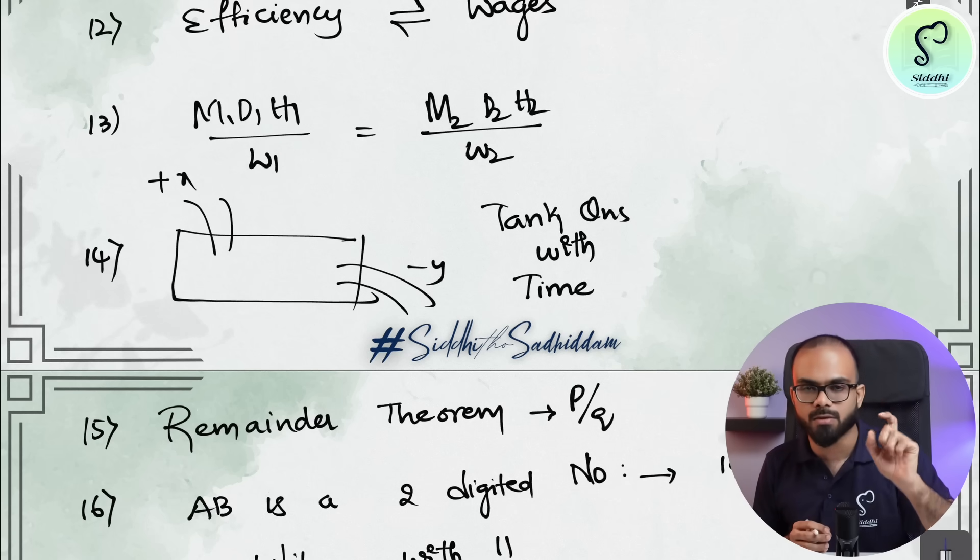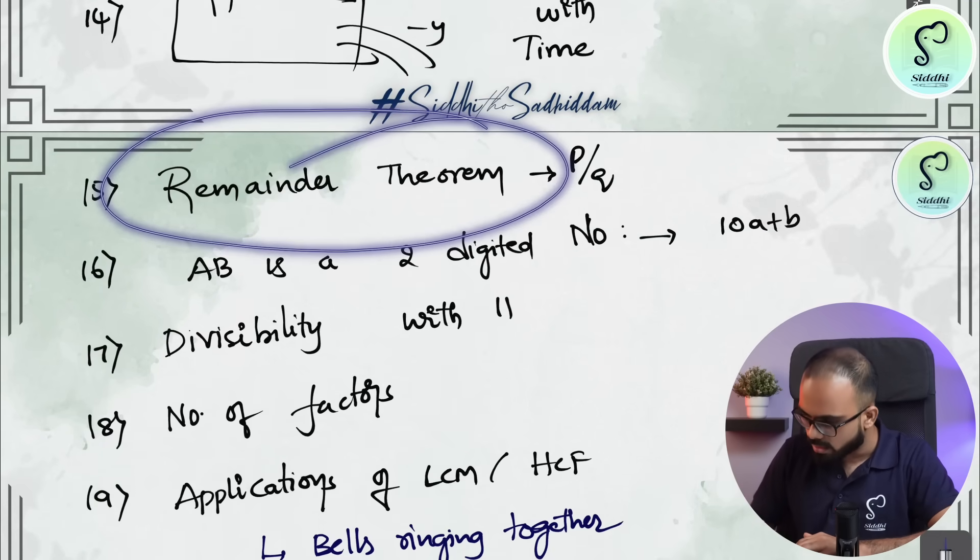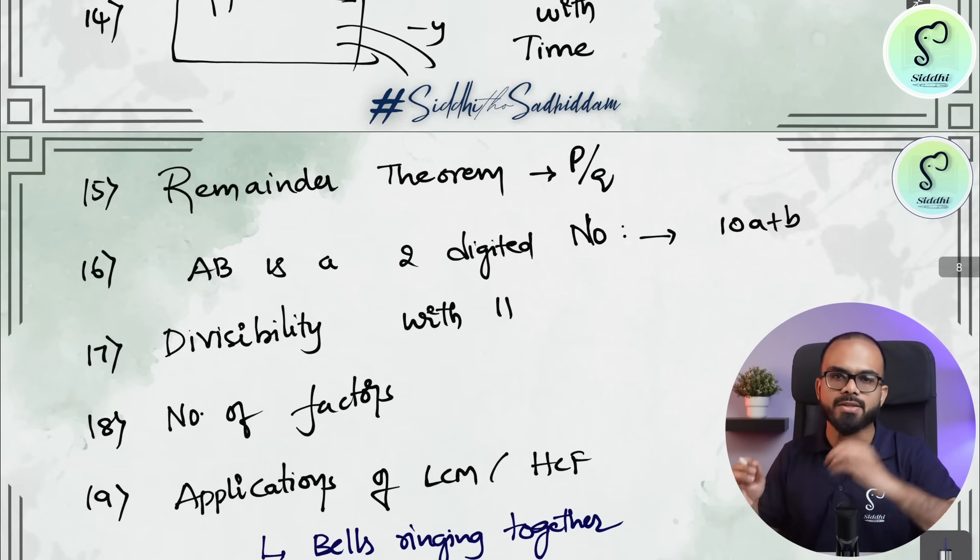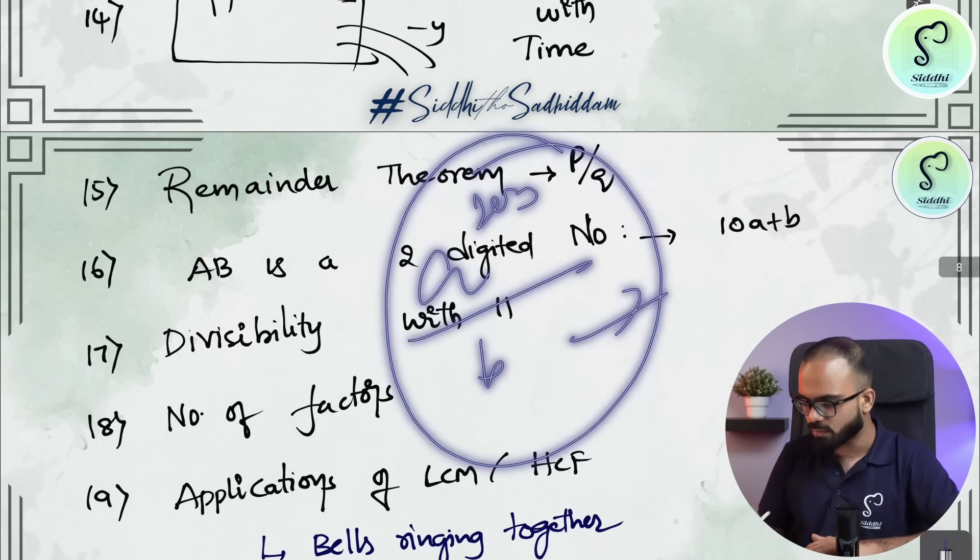So in taps questions, the questions where timing is involved is important. Then remainder theorem based questions. In remainder theorem based questions, you have fractional format where it will be in the format of A to the power of some 203 divided by B. What is the remainder? These kind of questions.